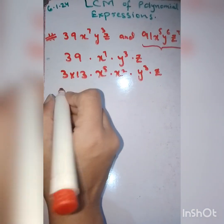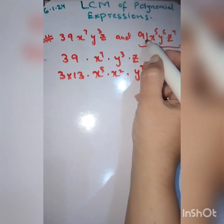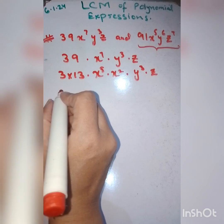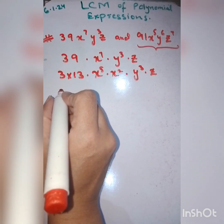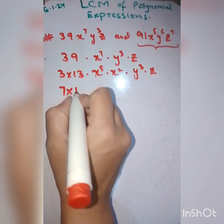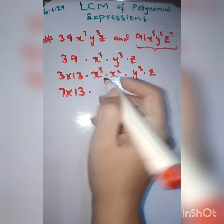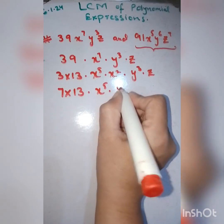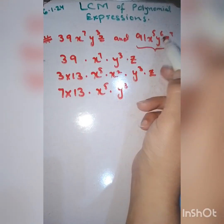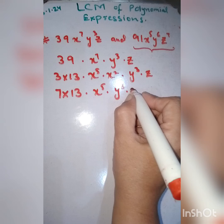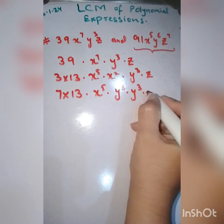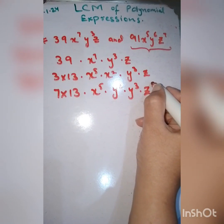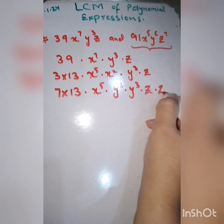Next is 91. For 91 I'm going to break it up into 7 times 13, then x^5 remains the same, y^6 can be divided into y^3 and y^3, then z is 1 and z is 6.